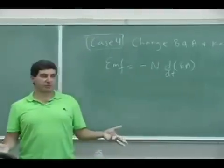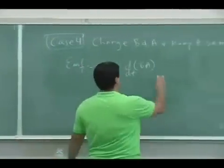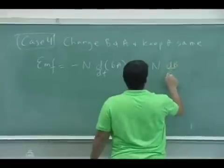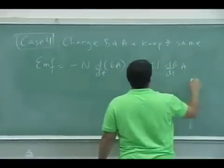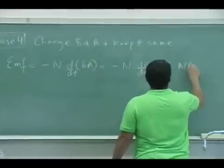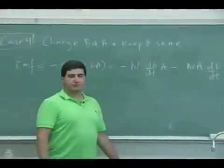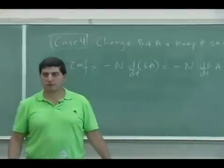So now it's just an application of the product rule, right? If both of them are changing, so I could have dB/dt times A minus N times A dB/dt, OK?